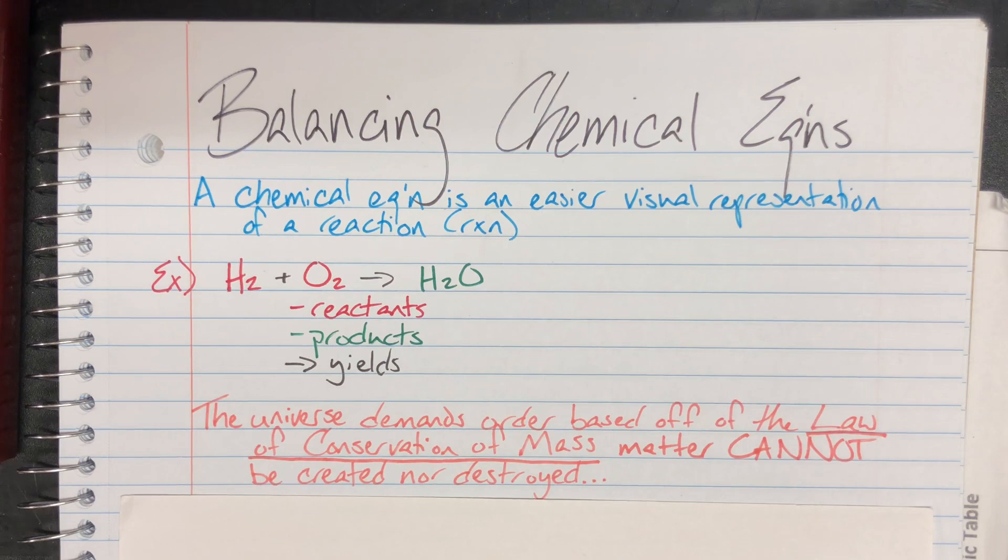Why bother balancing chemical equations? The universe demands order based on the law of conservation of mass. The law of conservation of mass is pretty self-explanatory - it's the conservation, which means it must stay the same, of mass. My mass must stay the same, and matter cannot be created nor destroyed.